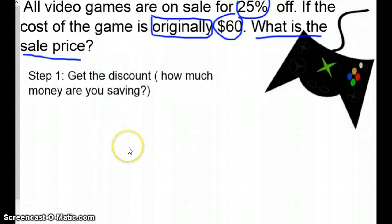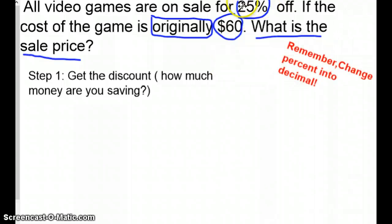Okay, remember step one, get the discount. How much money are you saving? The first thing that we want to do is take this 25% and get it into decimal form. So 25% is 0.25 and we want to multiply it by the original cost, which was 60. When we multiply 60 by 25 hundredths, we are going to get $15. This 15 right here represents the money that we are saving with this 25% off. So if you're saving $15 with this 25% off, in order to figure out the sale price, we need to subtract.